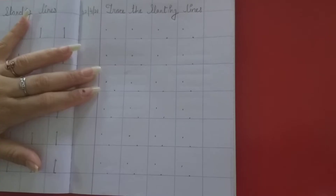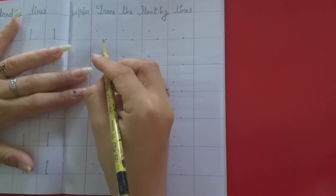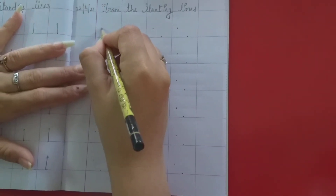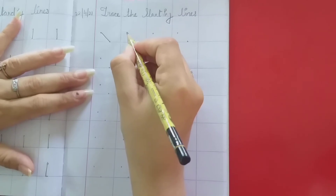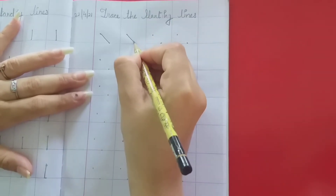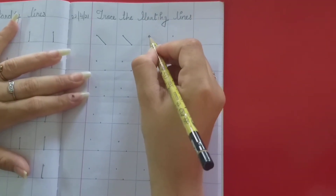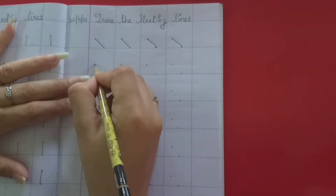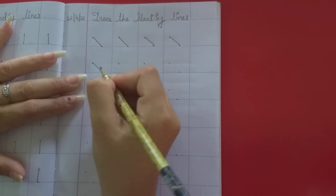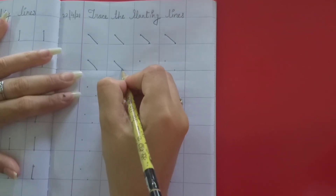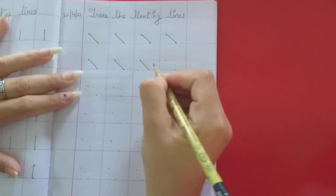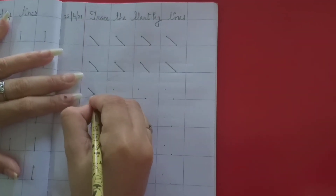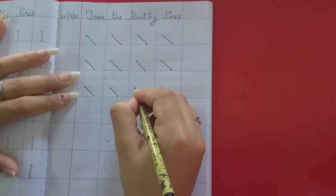Come, trace the slanting lines. So which will we do first? Left to right. What we have drawn on the board — this is left to right.